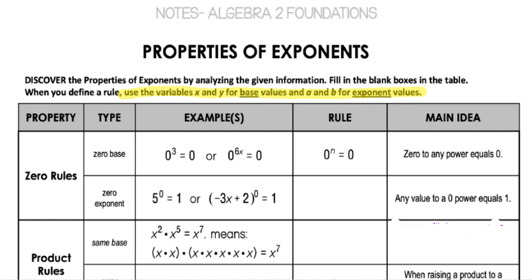The first property we're going to talk about is the zero rules. There are two different things going on here: we can have a zero base or we can have a zero exponent. When zero is the base, we're multiplying zero by itself over and over again, so zero to any power is zero — it doesn't matter what the exponent is.